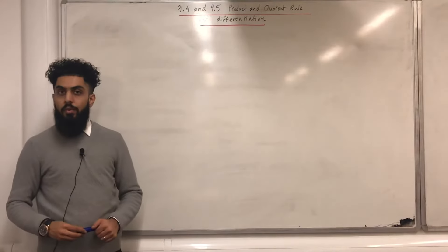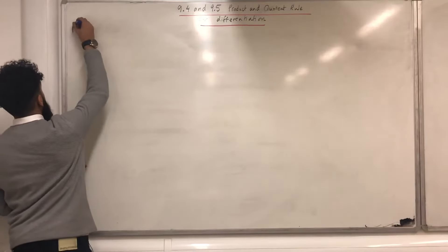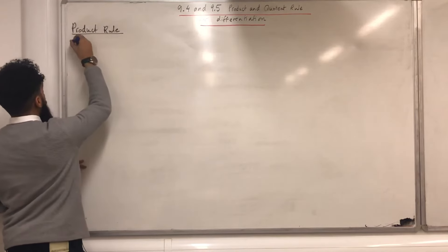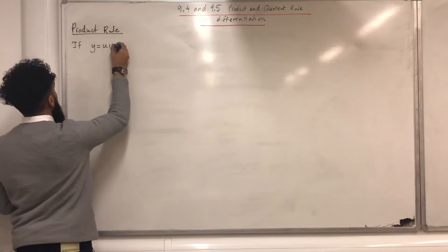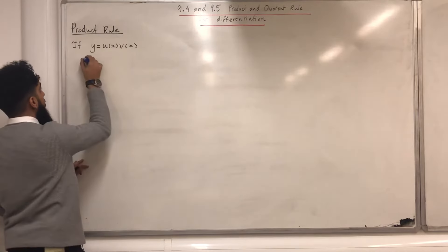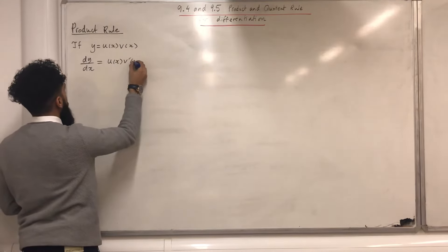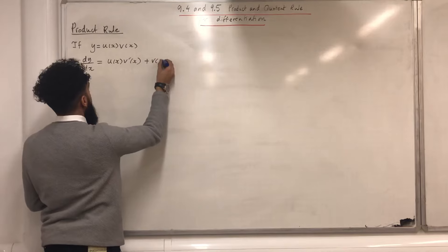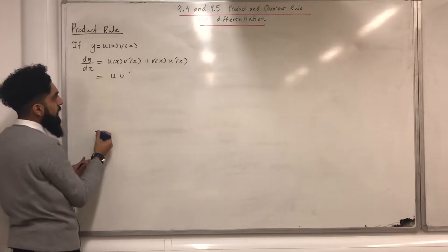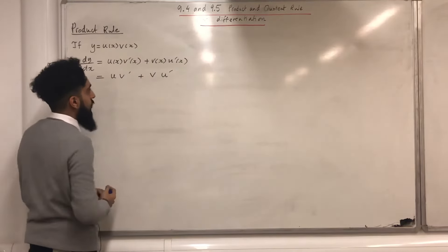Moving on to the product rule and the quotient rule for differentiation. The product rule says if y is equal to u(x) multiplied by v(x), where u(x) and v(x) are both functions in x, then dy/dx is given by u(x)·v'(x) plus v(x)·u'(x). In short, we can write u·v' plus v·u'. That is the product rule for differentiation.